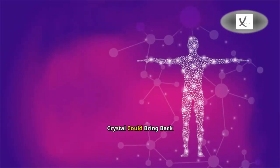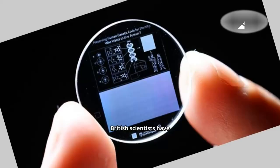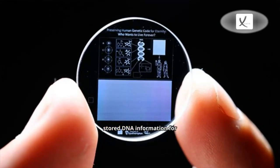DNA stored on crystal could bring back humanity after extinction. British scientists have stored DNA information for an entire human on a crystal, which could be used to bring back humanity if we become extinct.